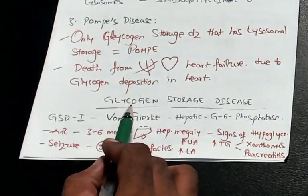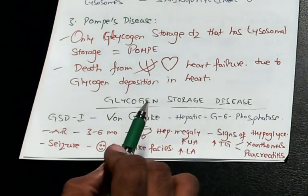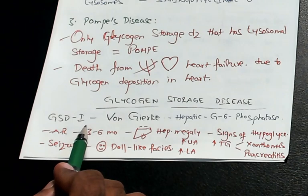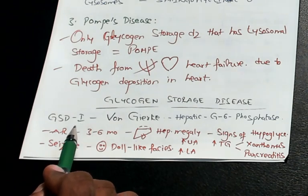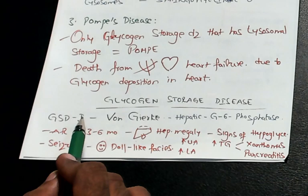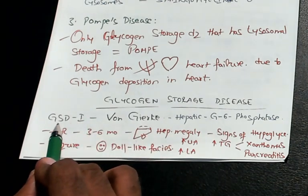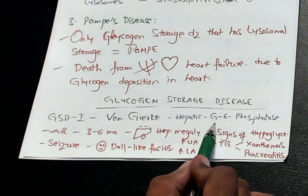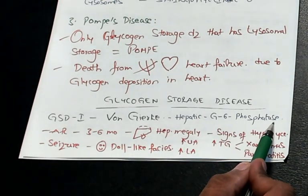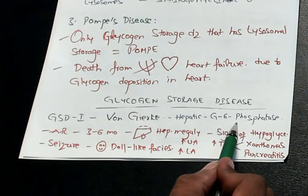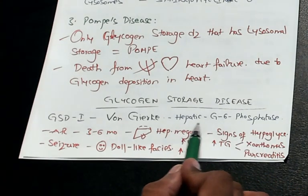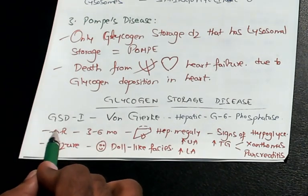Now let us study about glycogen storage diseases — just five points about each. It is a very dry topic, but definitely one question is going to come. Glycogen storage disorder 1 is Von Gierke disease. Hepatic glucose-6-phosphatase is deficient — it can't break glucose-6-phosphate into glucose. Glucose-6-phosphatase deficiency in the liver is the underlying cause of Von Gierke. It is autosomal recessive.